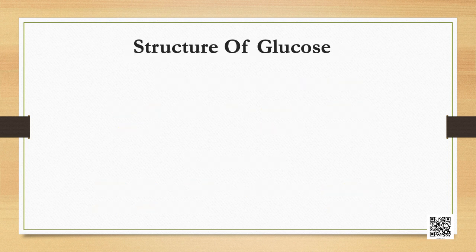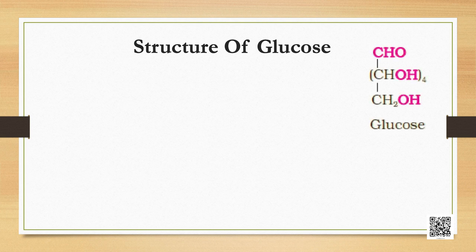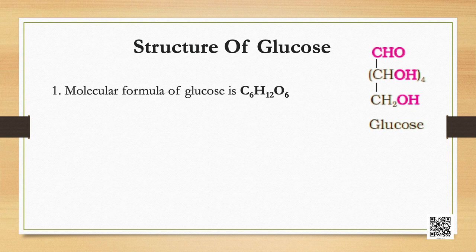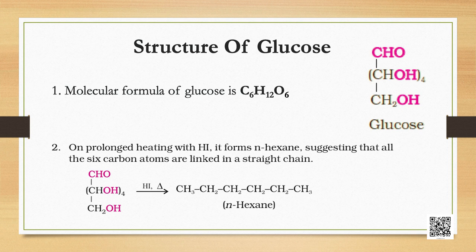Glucose is an aldohexose and is the monomer of many larger carbohydrates, namely starch and cellulose. It was assigned a structure on the basis of these evidences: first, its molecular formula was found to be C₆H₁₂O₆; second, on prolonged heating with hydrogen iodide it forms n-hexane, suggesting that all six carbons are linked in a straight chain.